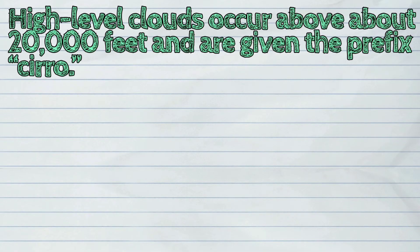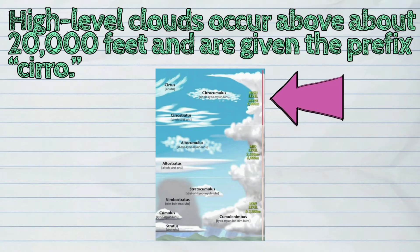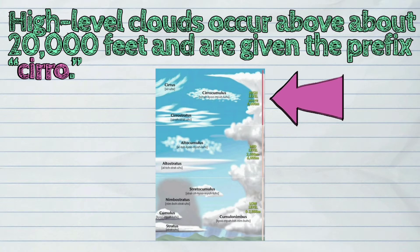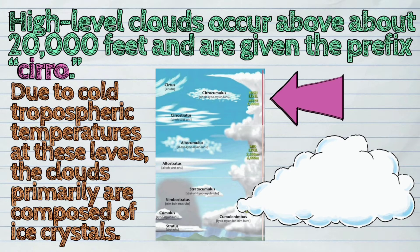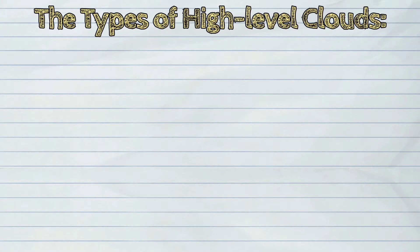High-level clouds occur above 20,000 feet and are given the prefix cirro. Due to cold tropospheric temperatures at these levels, the clouds are primarily composed of ice crystals. There are different types of high-level clouds.